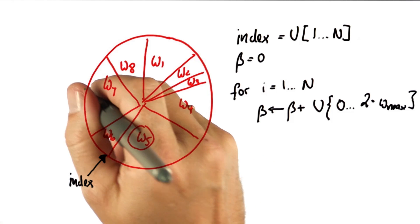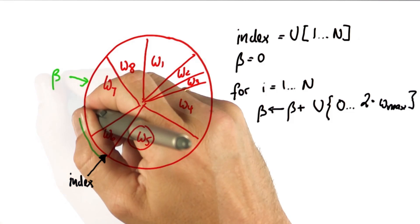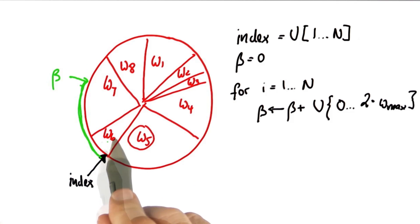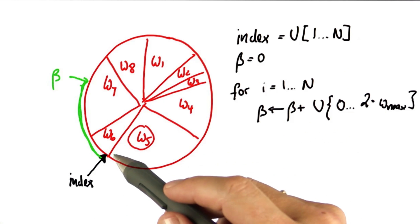Suppose the value we added brings us to here. So this is the value we actually drew, measured from the beginning of the sixth particle we chose in the initialization. I now then iterate the following loop.